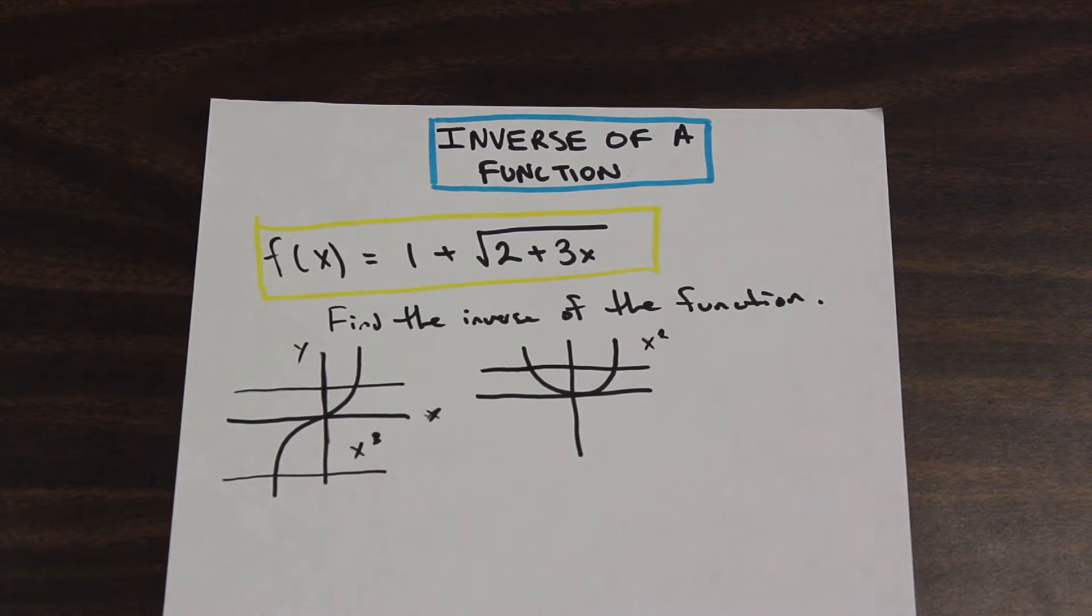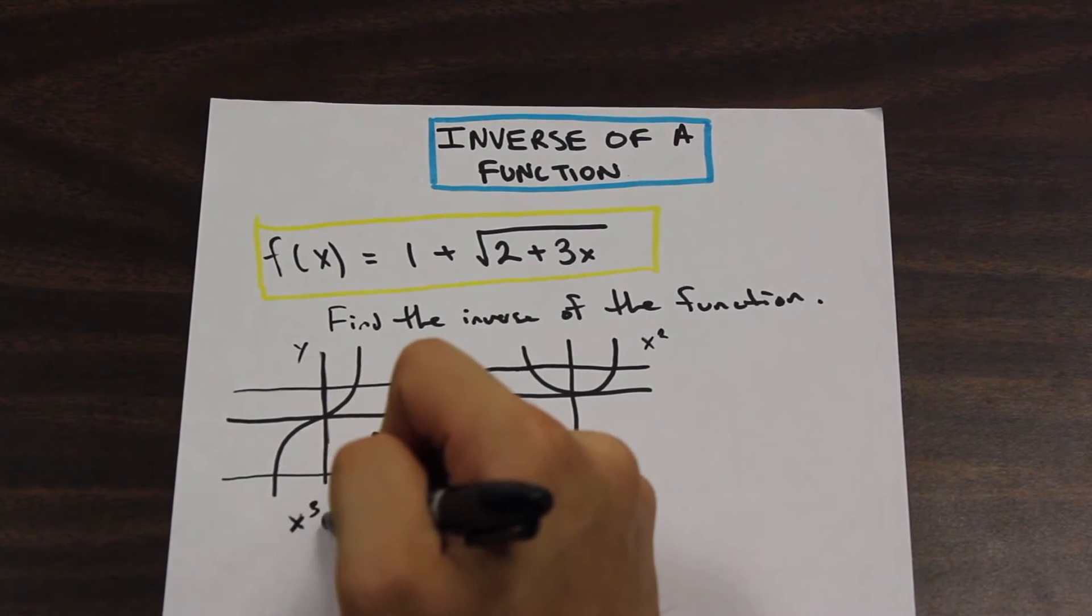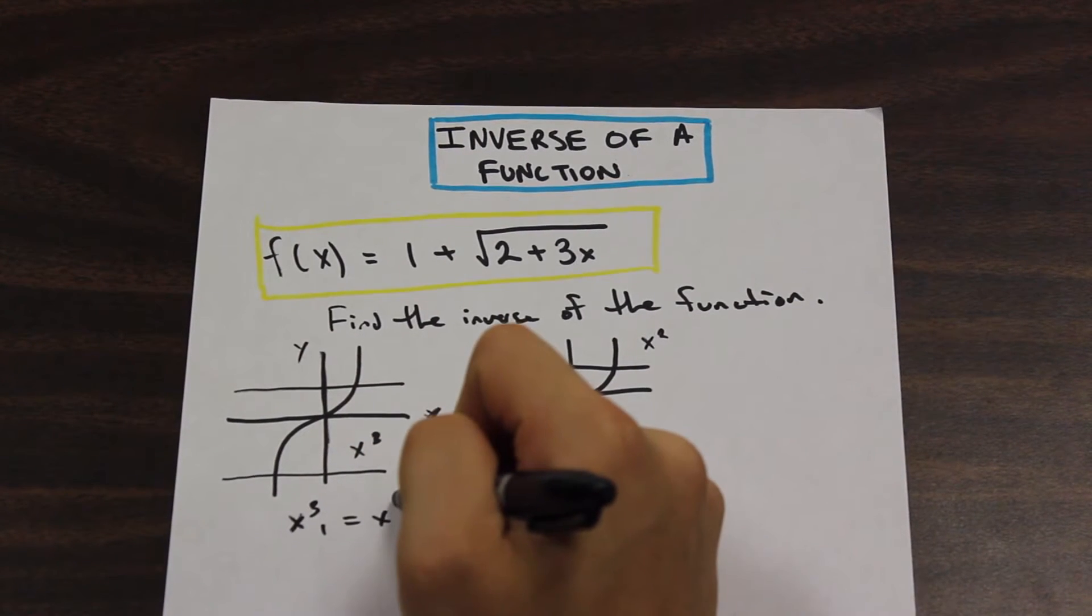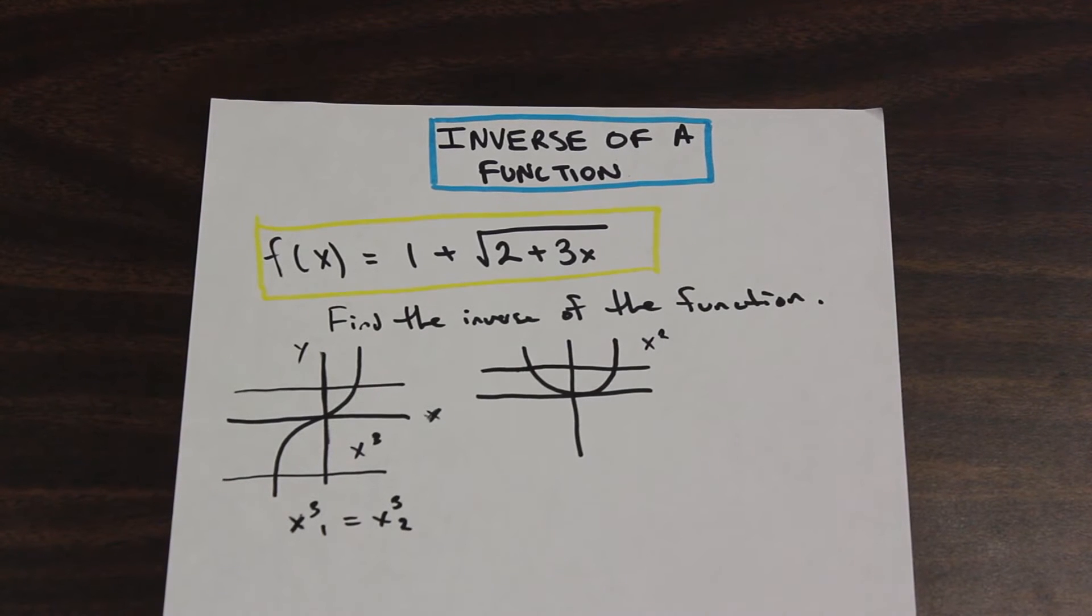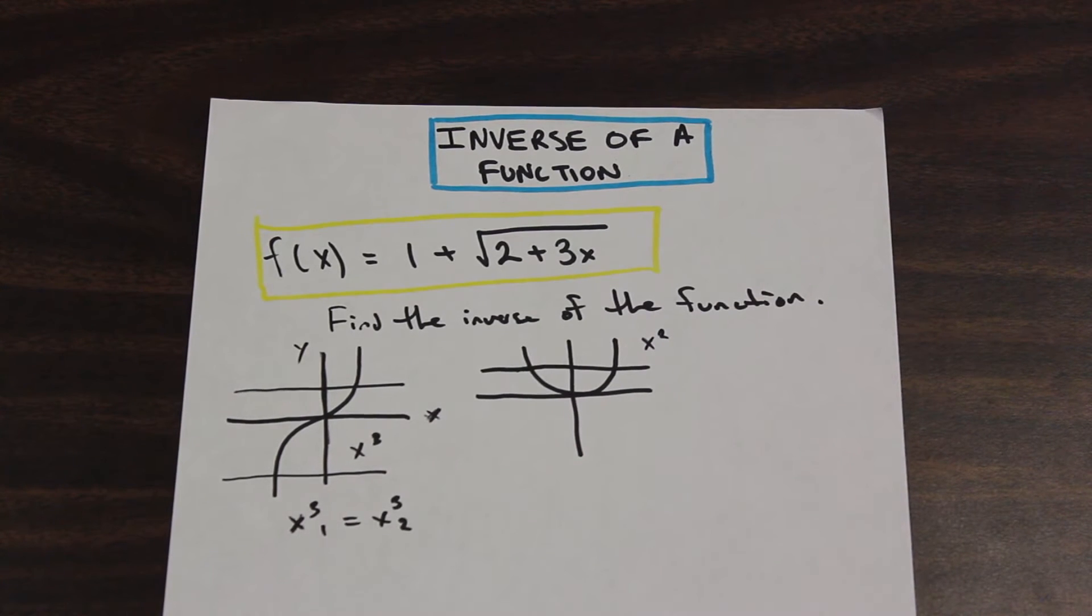So how we can also kind of show that is like if we have x cubed 1 equals x cubed 2. So if there is a number that exists for x cubed 1 that would equal x cubed 2, and another number that I can put in here, so for example, if I were to put in like 3 into here.